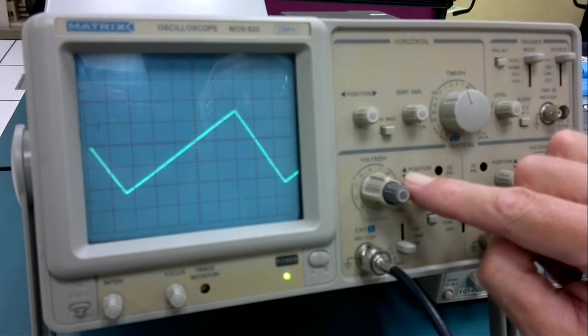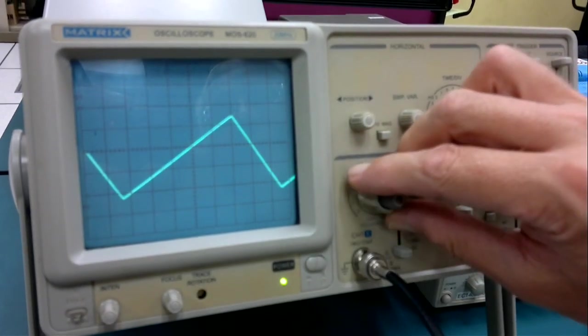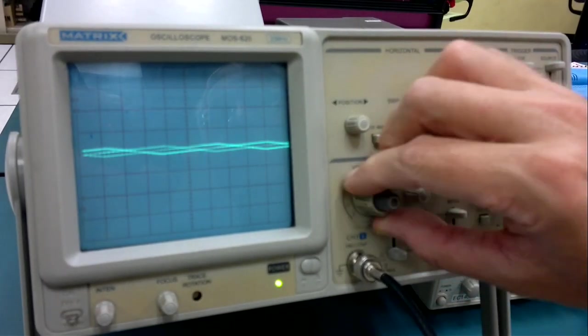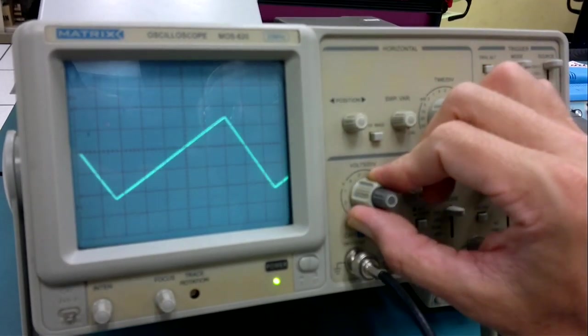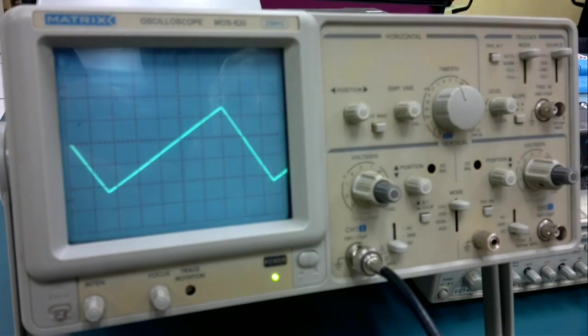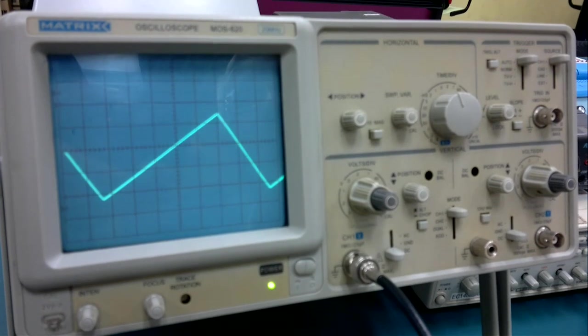Similarly, with the volts per division control we have down here, we can zoom in, we can zoom out. It's best to zoom in until you can see the whole shape on the screen. That is how the oscilloscope works.